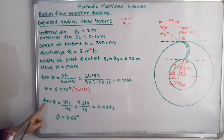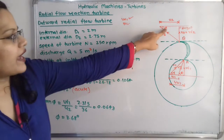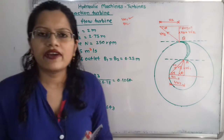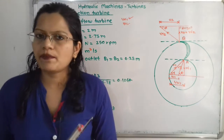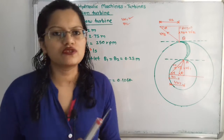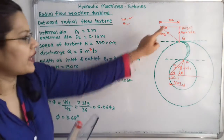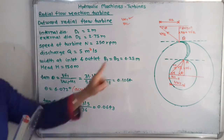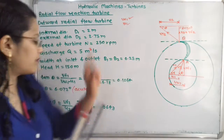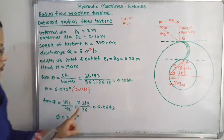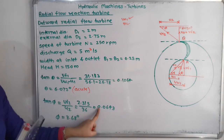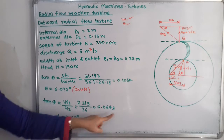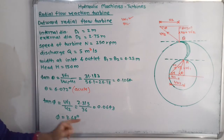Now we calculate phi, the vane angle at the outlet tip. These angles theta and phi are the vane angles at the inlet and outlet tips respectively, which is what the question asks. Using tan φ = Vf2 / U2, with Vf2 = 2.315 and U2 = 36, we get tan φ = 0.0643, therefore phi = tan⁻¹(0.0643) = 3.68 degrees. These are the final answers.